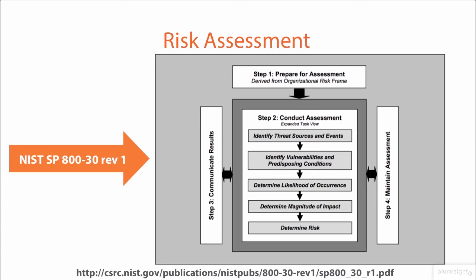Step four is maintaining the assessment. Things change over time — threats evolve, new vulnerabilities are discovered in operating systems and applications, so we continuously update. We must decide how we're going to monitor and how often. This is a reiterative process. Across all four steps, we're identifying threats and events, assessing vulnerabilities and their likelihood, determining the magnitude of impact, communicating findings, and continuously redoing this process.